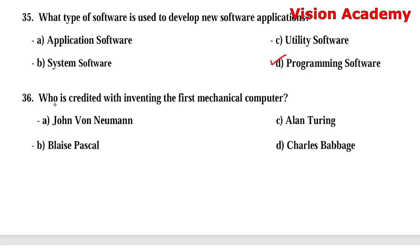Question 36: Who is credited with inventing the first mechanical computer? Option A: John Von Neumann. Option B: Blaise Pascal. Option C: Alan Turing. Option D: Charles Babbage. The right answer is Option D, Charles Babbage.